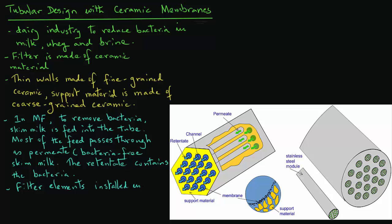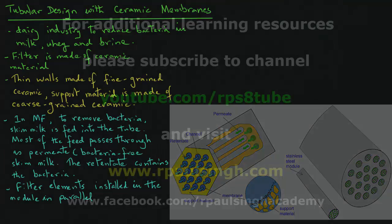The filter elements are installed in this module in parallel. So again, this is an example of how a ceramic membrane may be used in the food industry.